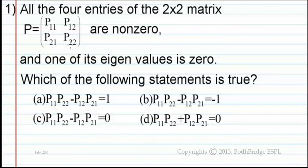Here it is given that all the elements of this matrix are non-zero and the question is asking to find the relation between these elements. We know that one of the eigenvalues is 0.